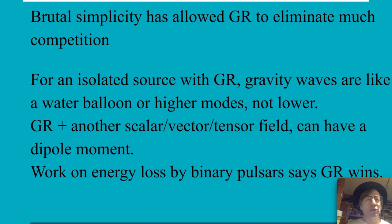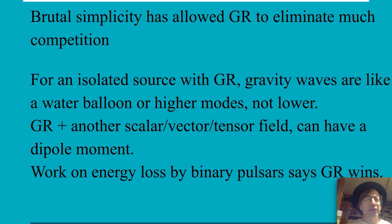There are two ways in which general relativity has eliminated nearly all the competition. One has to do with gravity waves. If you have an isolated source, it can wobble like a water balloon or higher-order terms. If you want a richer theory and add some more stuff, it's almost as if you add anything to that, then you will have a dipole moment. Experimentalists have measured gravitational wave loss by binary pulsars and say quadrupole has to be the lowest moment — if you predict a dipole, your proposal is wrong. That eliminates a lot of proposals.